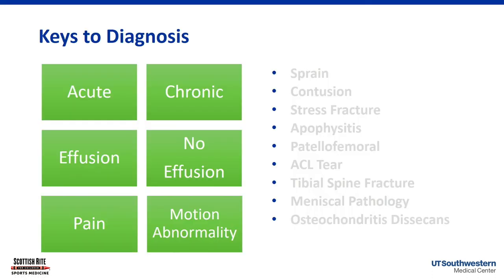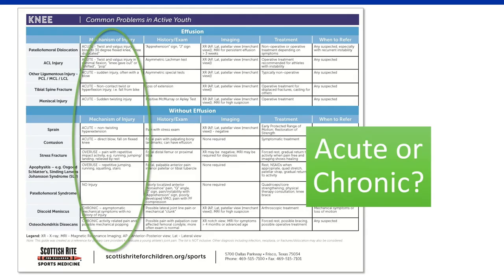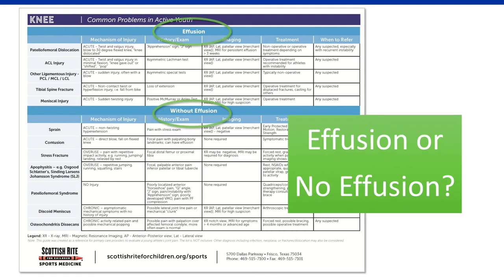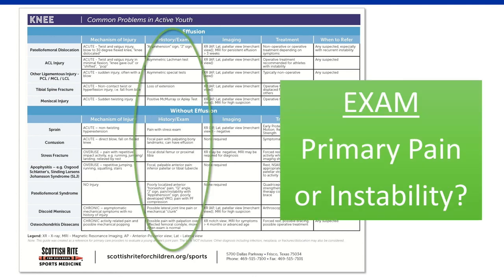I hope that by breaking it down into acute versus chronic, effusion versus no effusion, and pain versus motion abnormality, you can get some organization to your knee exam. We've made a handout that lists these diagnoses by effusion or no effusion, with key mechanism of injury, history, physical findings, and usual treatment. We really hope this algorithm of care, in conjunction with that handout, can help you organize your thoughts around the knees you're thinking about referring.